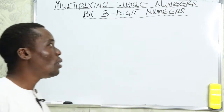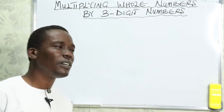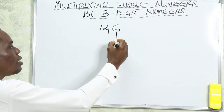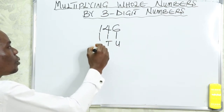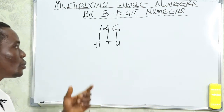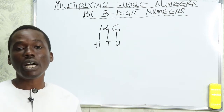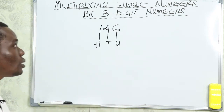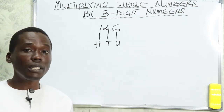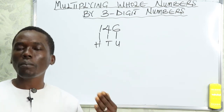Today we'll be looking at multiplying whole numbers by three-digit numbers. Three-digit numbers are numbers like 146, where you have the units, the tens, and the hundreds — that makes three digits. We are going to follow the same method we used for two-digit numbers. I'm going to show you three methods we can use: the expanded form method, the digit form method, and the partial product method.